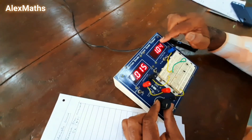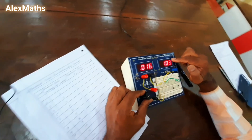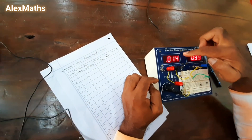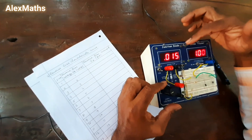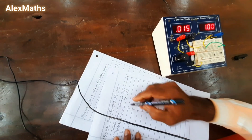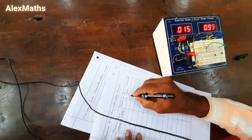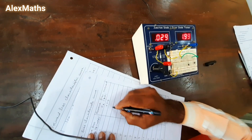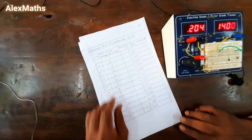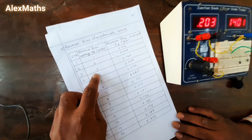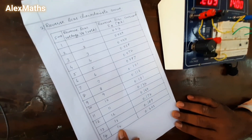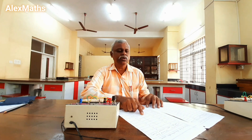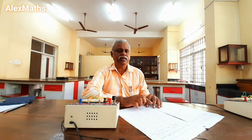First, you have to keep the voltage at 1.00 volt. This is the current you are getting in microampere — you are getting 0.014 microampere. The same way for 2 volts, you are getting 0.029. Similarly, you can take readings for 3 volts, 4 volts and so on, up to 14 volts. From these readings, you have to plot all the points in the graph.